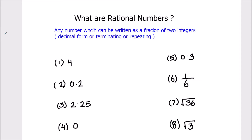Hello students. In this video we are going to learn what are rational numbers. Any number which can be written as a fraction of two integers, whether it is in decimal form, a terminating decimal, or a repeating decimal, is called a rational number. One thing to keep in mind is that the denominator should not be equal to 0. So integer over integer makes the rational number.